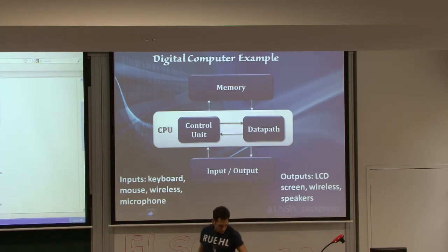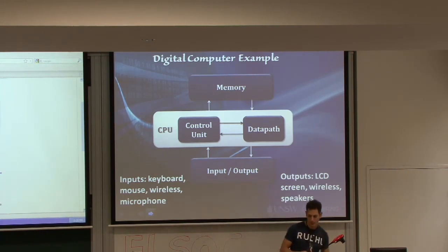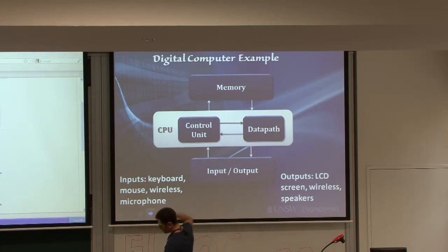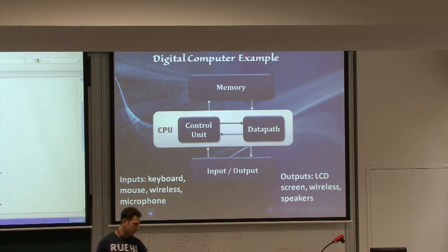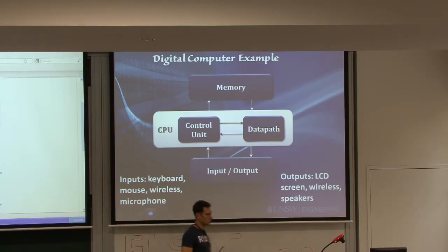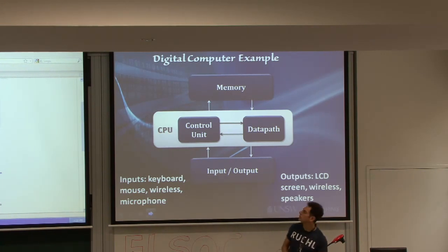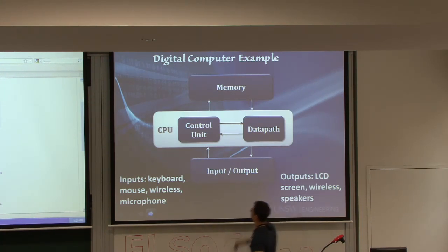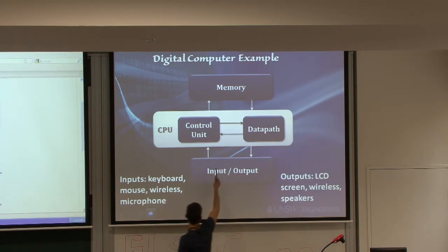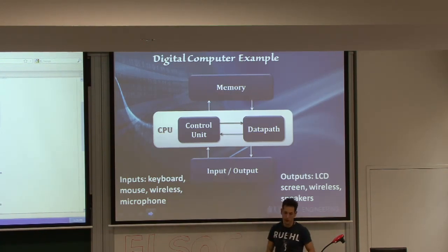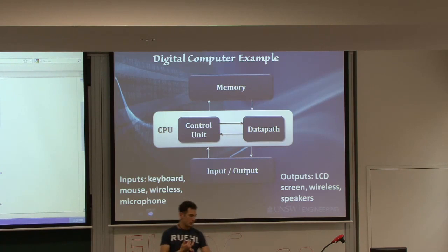On the other spectrum of digital systems, there's a digital computer. A digital computer is a digital system. It has memory, so it has a state — and a lot of memory. It also has internal structure built by the control unit and the data path, and it gets signals from the I/O devices — the input and outputs.